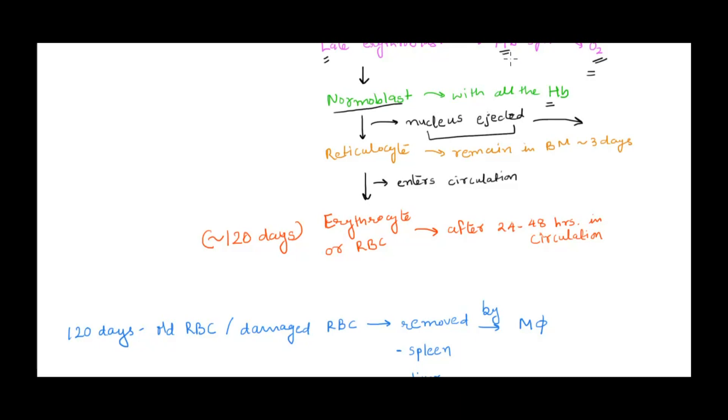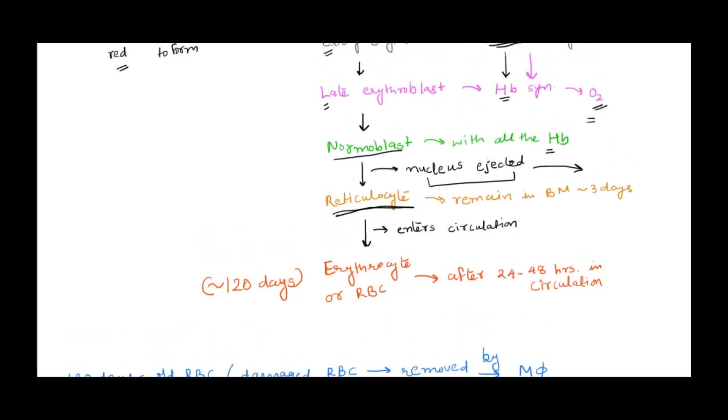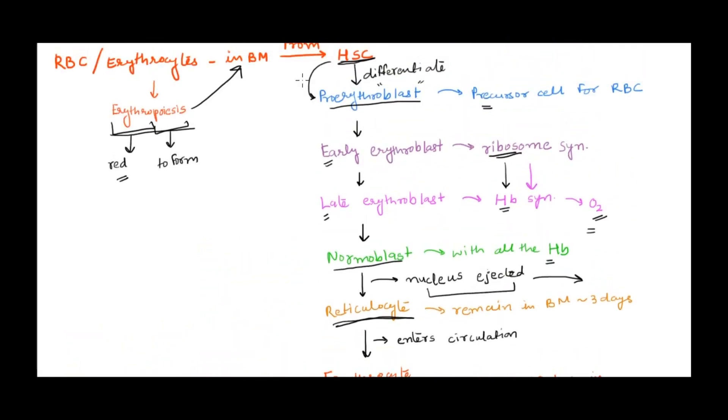If you look at the function of RBC, the main function is just to transport oxygen. It has synthesized the important product hemoglobin needed for transport, so it can now eject the nucleus and put all its efficiency into oxygen transport. When the nucleus is removed, this stage is called reticulocyte.